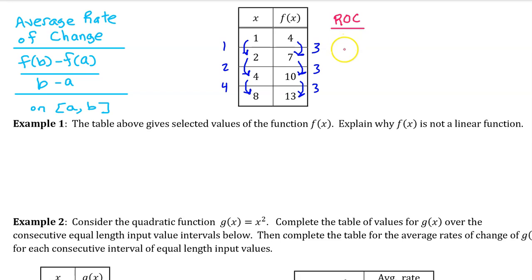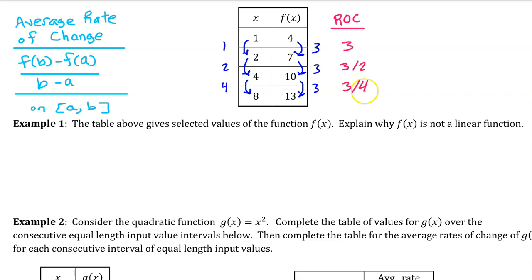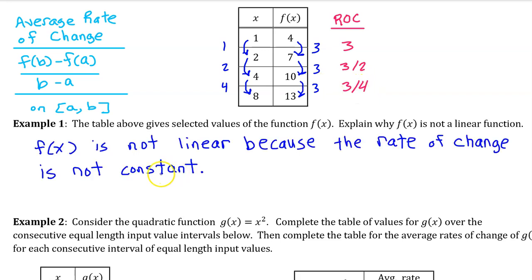Now we can record the rate of change for each interval — it's the change in y divided by the change in x. So that will be 3 divided by 1, which is 3; then 3 over 2 for the next interval; and then 3 over 4 for the third interval. We know that f of x is not linear because the rate of change is not constant. If f of x had been linear, each of these numbers would be the same.